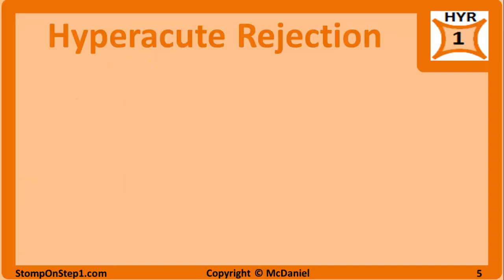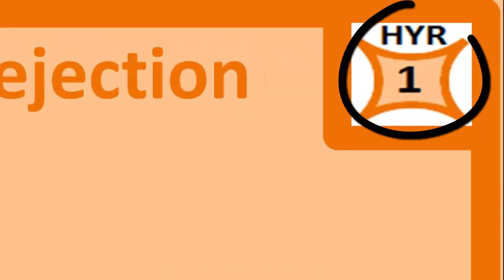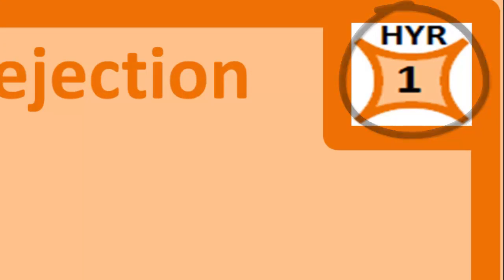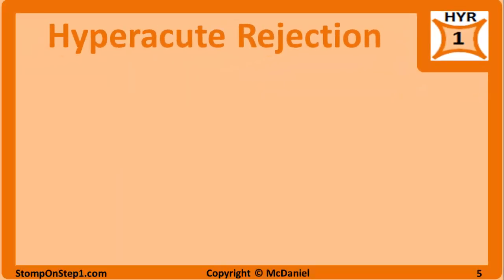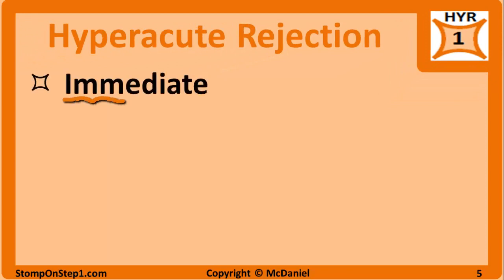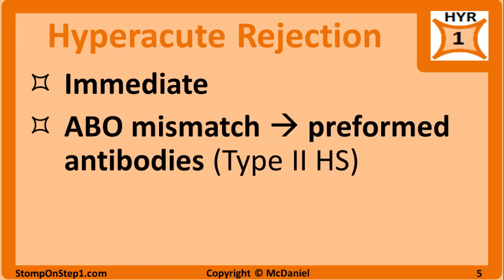We will start with hyperacute rejection, which has a high yield rating of 1 on a scale of 0 to 10 for the USMLE Step 1 exam. Hyperacute rejection occurs almost immediately — it's often evident while you're still in surgery, already seeing signs of rejection. It is caused by accidental ABO blood type mismatching of the donor and the recipient.